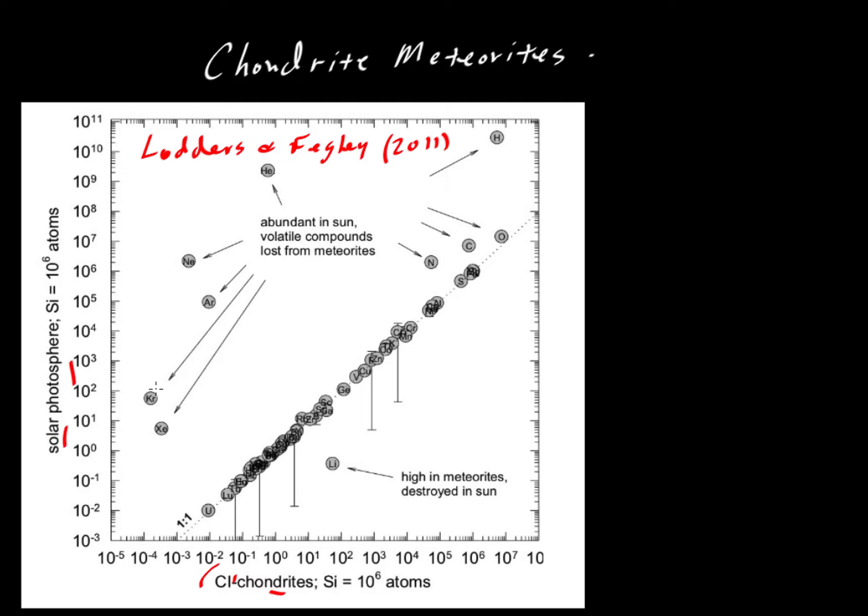The photosphere is the outer atmosphere of the Sun, so we are comparing the composition effectively of a rock to the gaseous parts of the outer part of our star. And what's stunning, here's a one-to-one correlation line. If they perfectly matched, all the elements would fall along that one-to-one line. You can see most of the elements do.